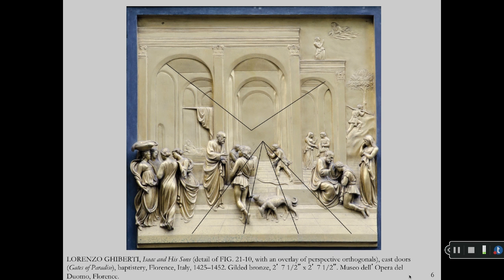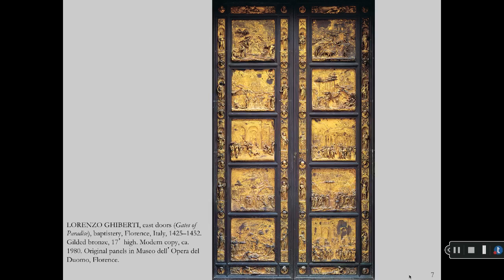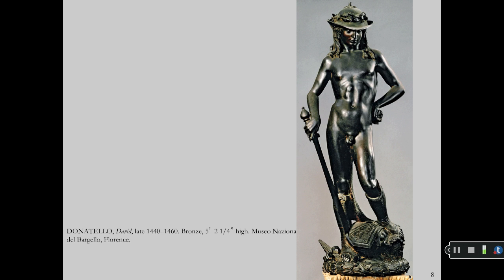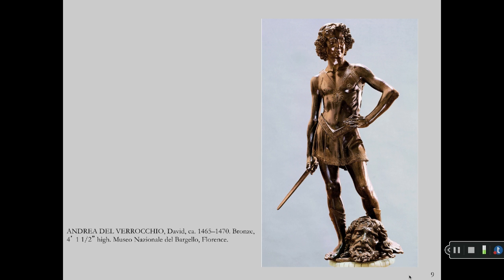Giberti's Isaac and His Sons with the perspective diagrammed. Giberti's East doors in gilded bronze. Donatello's David is the first freestanding nude statue since antiquity. Andrea del Verrocchio's David has a jaunty pride rather than the classicism of Donatello's David.